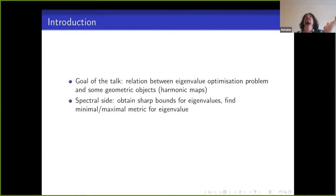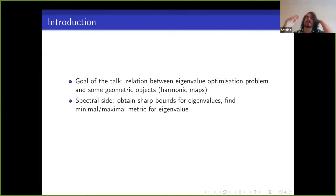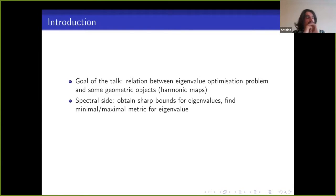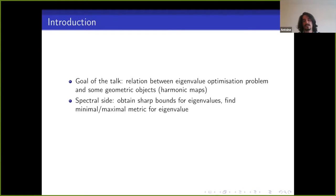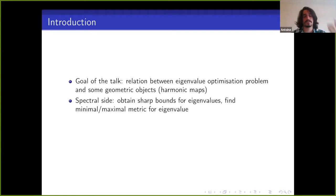There are two sides to this relationship. On the spectral side, this kind of relationship allows us to find minimal or maximal metrics for different eigenvalues on different surfaces, and also allows us to obtain sharp bounds for eigenvalues. For example, Nadirashvili in the 90s used this to find the maximal metric on the torus and showed that the maximum metric corresponds to the flat equilateral metric on the torus — you can get really sharp bounds if you can find the maximal or minimal metrics.